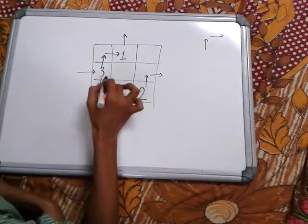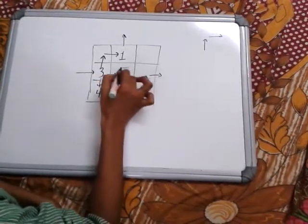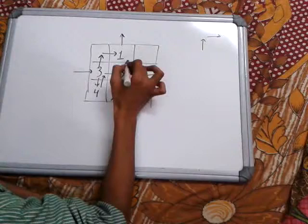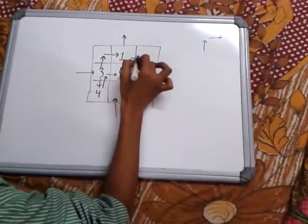Now, one above, one up or one right. Fill 5. Again, one up and one right. Fill 6.